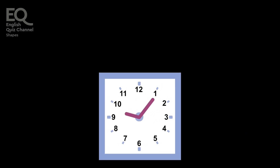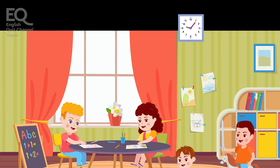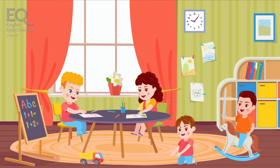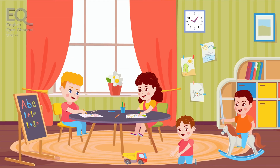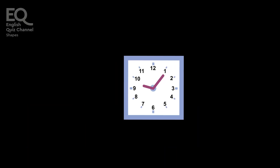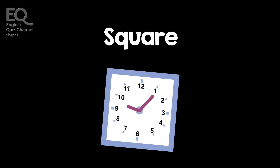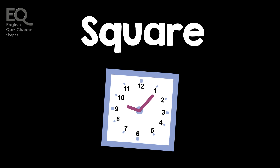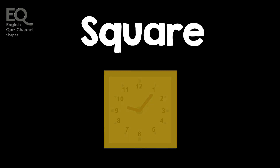This is a clock. Clocks are generally round. But this clock isn't round. This is a square clock. This is a square.